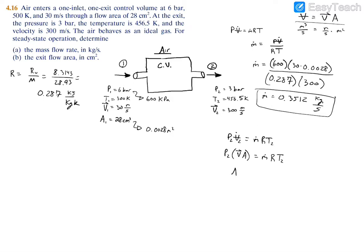Now we just solve for the area. So you have the area is equal to the mass flow rate times the gas constant times the temperature, divided by the pressure, as well as the velocity. And we do have everything here, so now all we have to do is plug everything in. So the mass flow rate we just solved for, 0.3512 kilograms per second. Gas constant was 0.287 kilojoules per kilogram Kelvin, and the temperature was 456.5 Kelvin. We're going to divide that by the pressure, so 3 bar, just times 100, kilopascals, so we have 300 kilopascals. And the velocity is 300 meters per second.